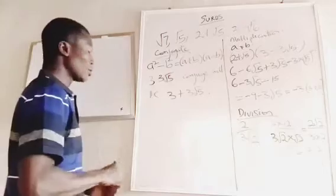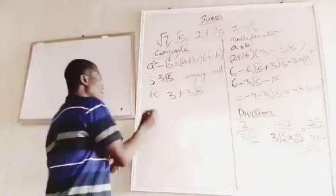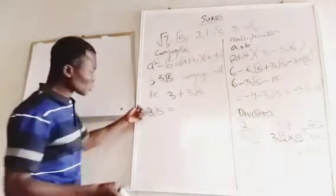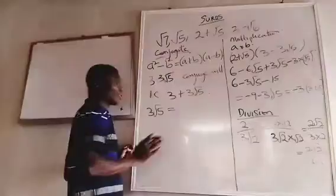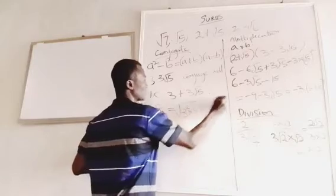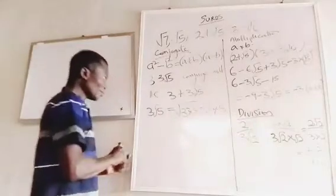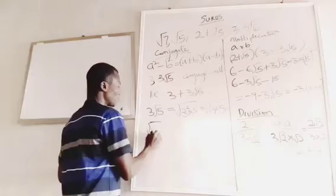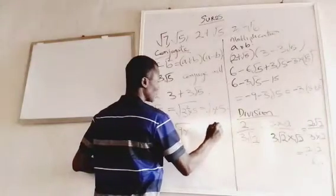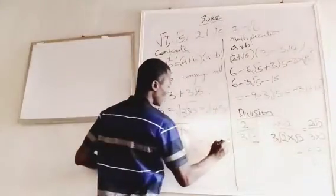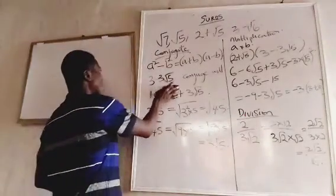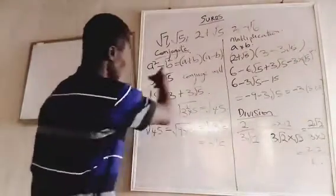It is also worth noting: when we have a number like 3 root 5, we can bring the 3 under the square root sign by squaring it and multiplying by 5. So 3 root 5 equals square root of 9 times 5, which is square root of 45. Conversely, root 45 equals root of 9 times 5 equals root of 3 squared times 5, which is 3 root 5. Now let's use conjugates in division of surds.